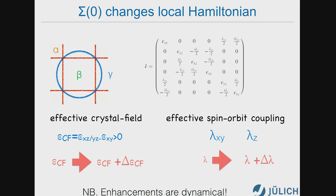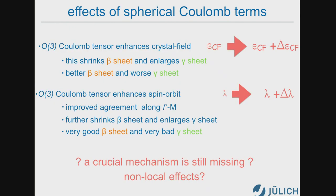To understand this result, we should look at what the self-energy is actually doing to the Fermi surface. If you have a Fermi liquid, the self-energy modifies the Fermi surface by changing the on-site parameters of the Hamiltonian — changing the crystal field and the spin-orbit coupling. What happens is that both the crystal field and spin-orbit coupling are enhanced for this system by Coulomb repulsion, more or less doubling their LDA values. These two effects together both make the inner sheet smaller and the outer sheet larger, so one gets better and the other gets worse, and there is no way of tuning U and J parameters to solve this issue.